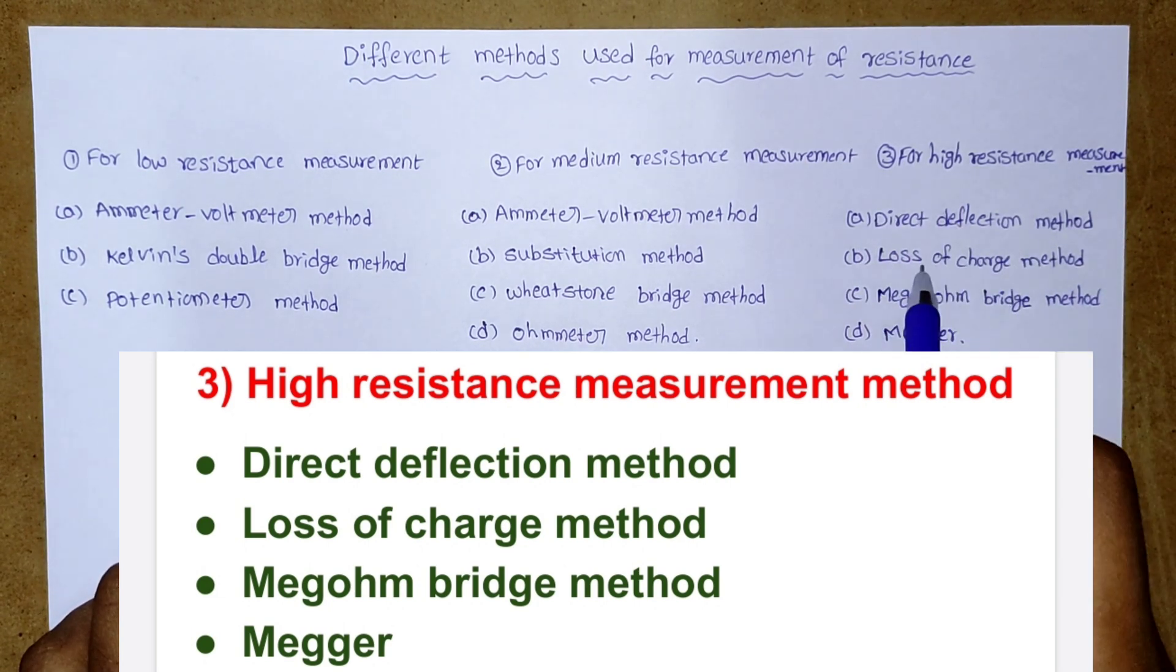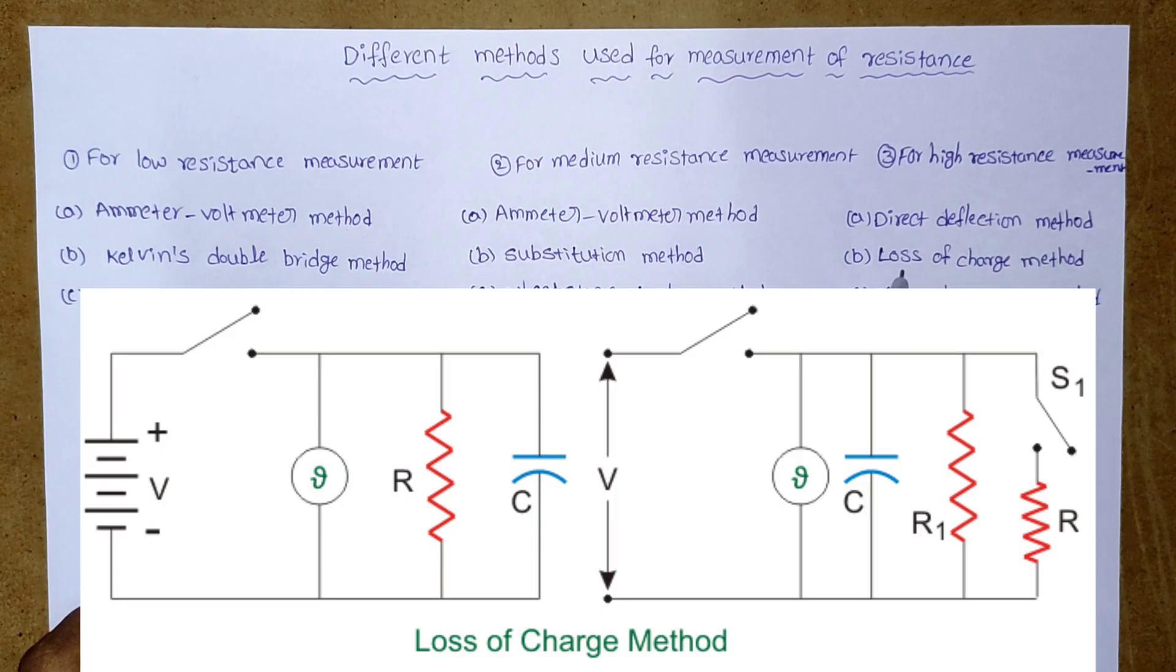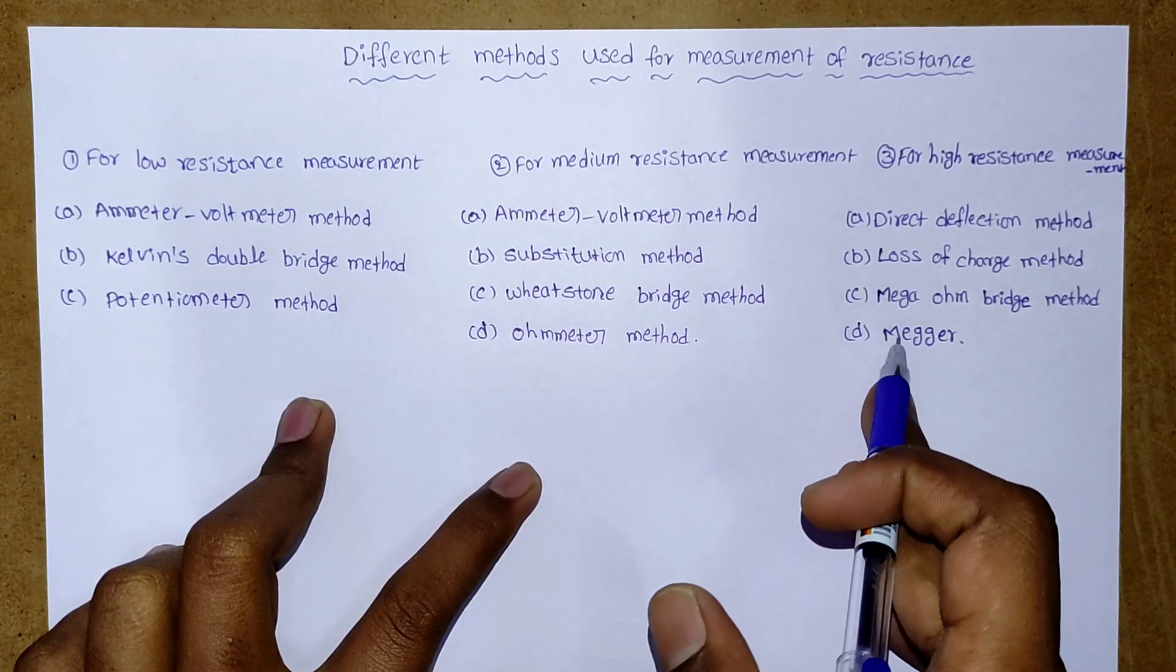We are using these methods. First one is direct deflection method. Second one is loss of charge method. Third one is megaohm bridge method. And finally is megger.